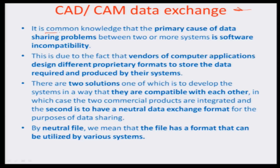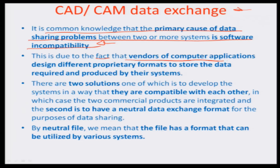The primary cause of data sharing problems between two or more systems is really due to software incompatibility. Most vendors of computer applications design different proprietary formats to store their own data and produce their own systems. The word 'proprietary' is important here because they hardly disclose the format in which the computer application stores the data. So when we try to interconnect many machines with different software, there is a huge problem of how that data can be processed and read by a series of controllers, eventually going into the implementation of stepper motors in an NC machine.